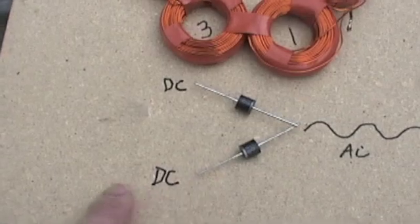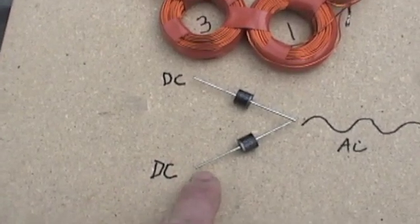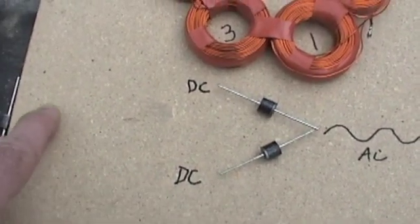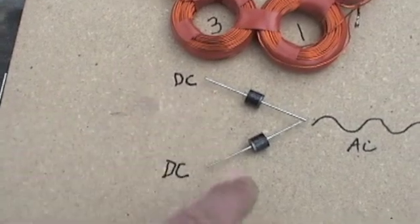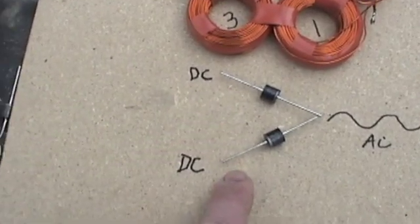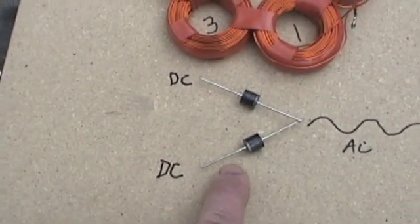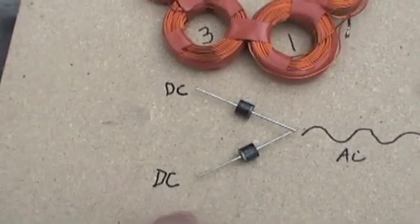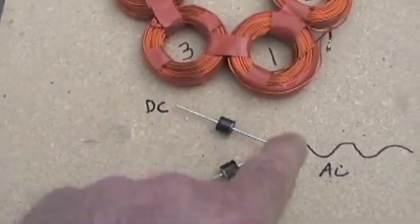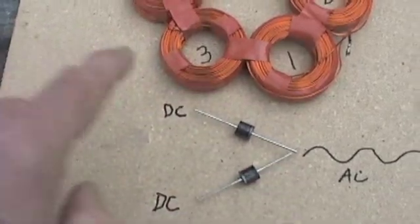The problem with direct current is it can't go very far because the electrons actually have to travel from here through the circuit and back. So if you've got 150 feet of wire, that electron has to go 150 feet back and around, and it loses power as it does.